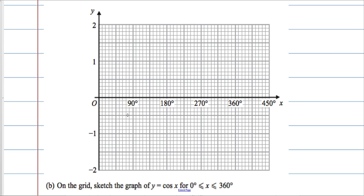Okay, next part. We've got another coordinate grid. Obviously this time on the x-axis we've got some degrees labelled, and on the grid we're asked to sketch the graph of y equals cosine x.